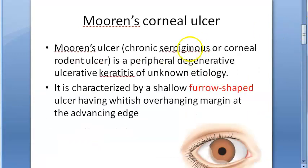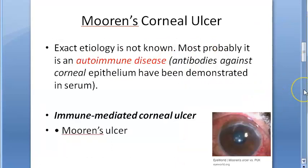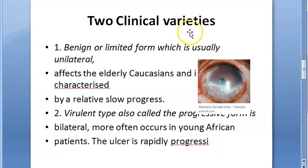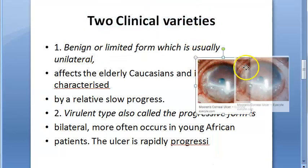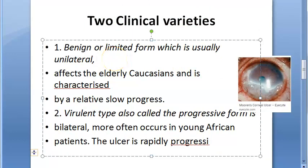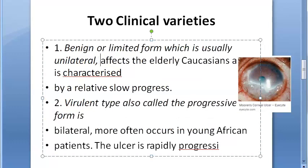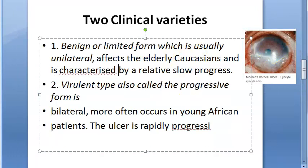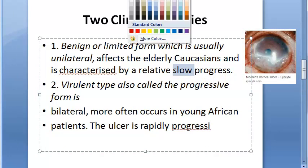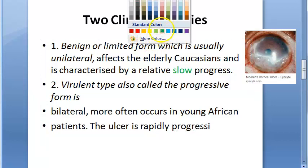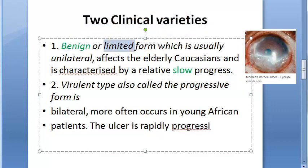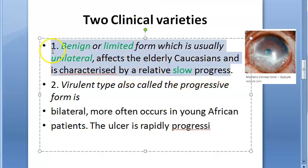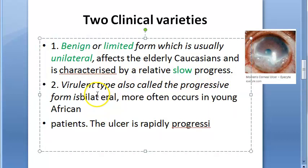There are two clinical varieties. The first is the benign or limited form, which is unilateral — affecting only one eye — in elderly Caucasians, and it is relatively slow. It is slow, benign, limited, and unilateral — so it is not very aggressive.